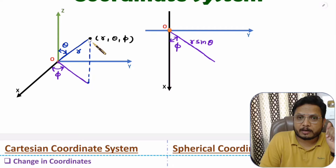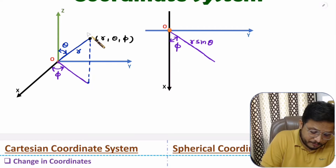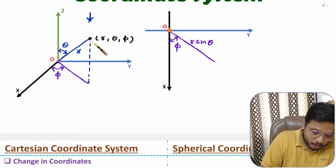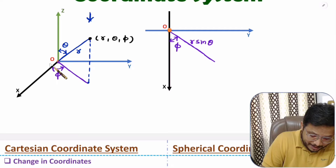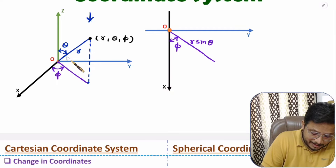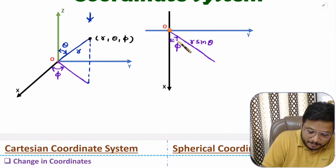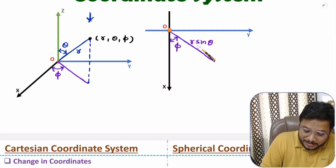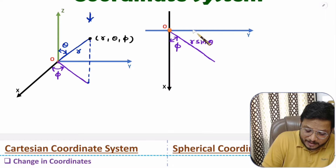If you observe this point from the top view, you can see the point projected on the x-y plane, where we have the x-axis and y-axis. In the top view, this line appears making angle phi with respect to the x-axis. The length of this line in the x-y plane is r sine theta.